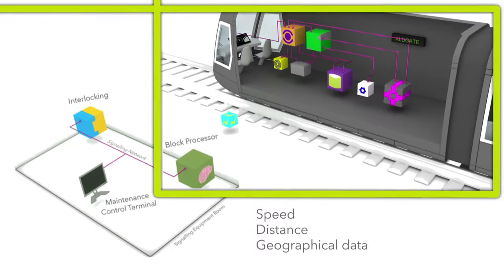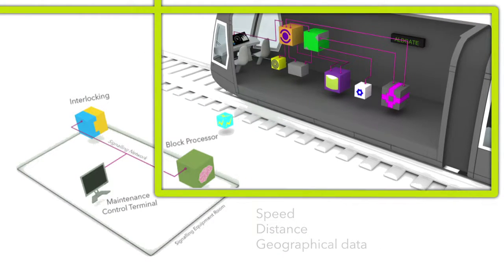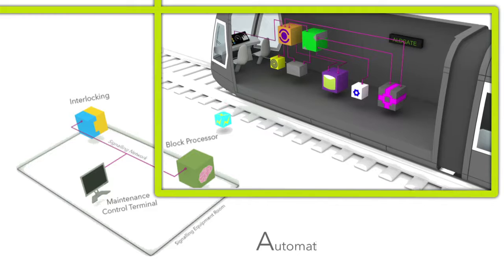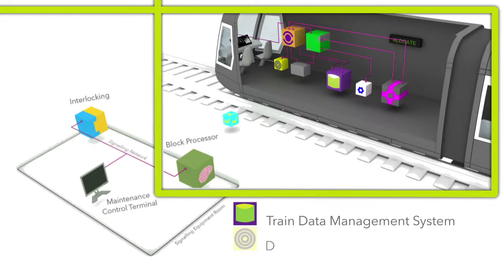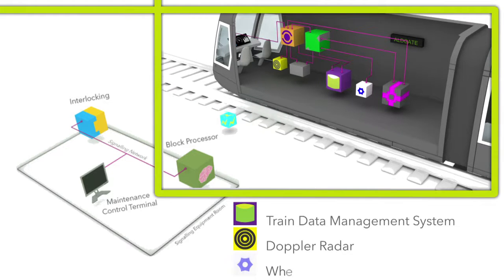The train carried CBTC system also features an automatic train control system, a train data management system and sensors including Doppler radar and a wheel speed probe.